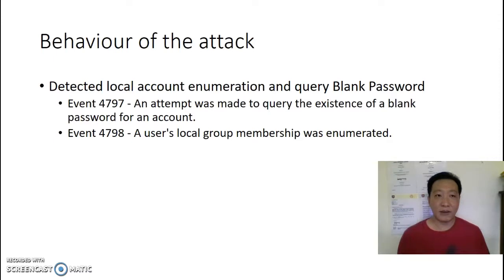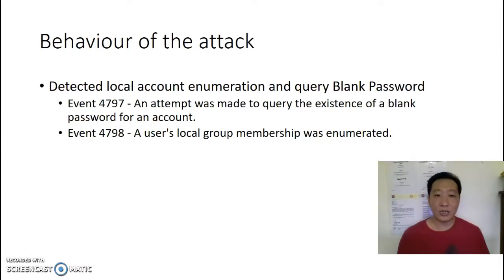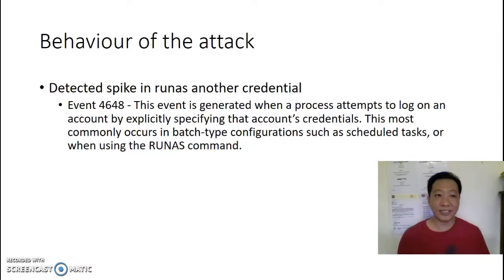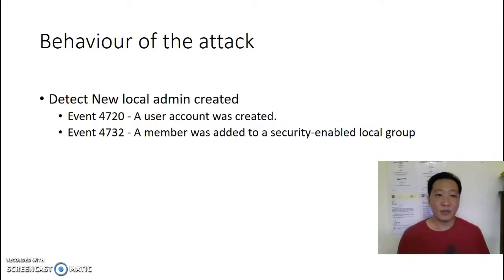I will demonstrate three attack scenarios today. The first scenario is detecting local account enumeration where someone is using a blank password. The second scenario is detecting a spike in running as another credential, which is normally okay but becomes a problem if there's a sudden spike. We also detect any new local admin account created that we did not know about.